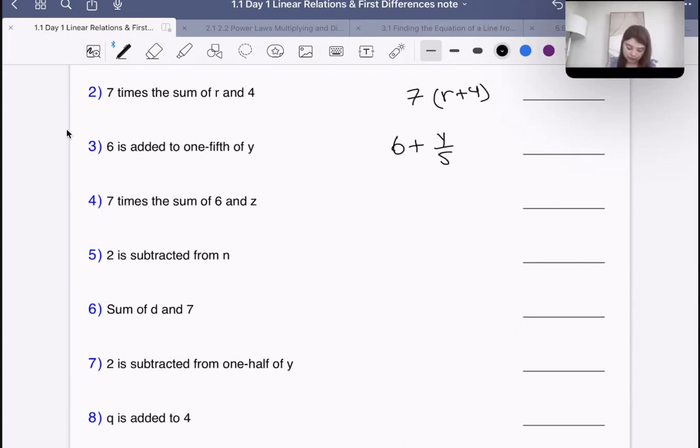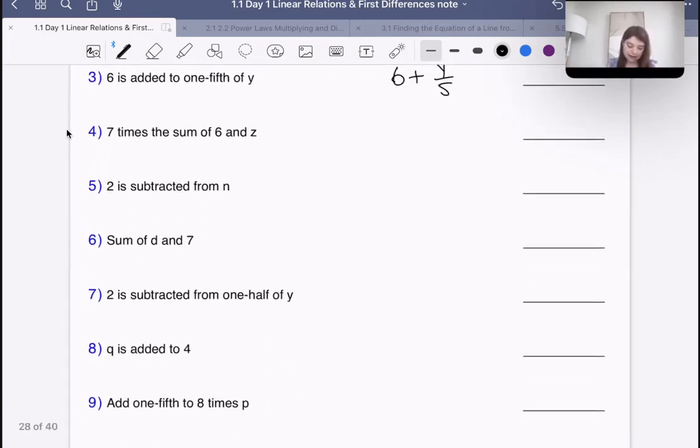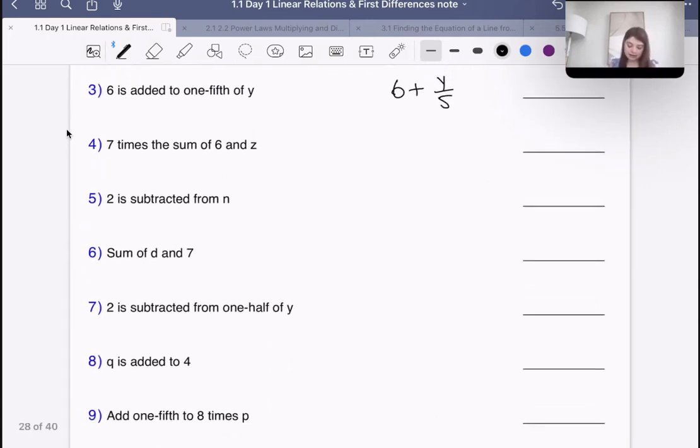Number four says seven times the sum of six and z. Here we have seven times the sum, so six plus z.